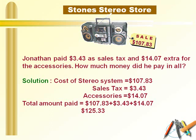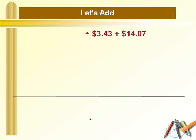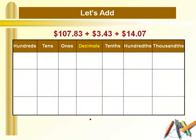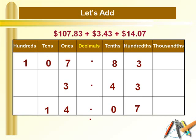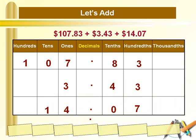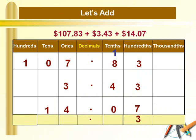Let's see how to add these three numbers. First of all, make a place value chart, put the decimal point in the decimal column, and place the numbers accordingly. Now let's add the digits on the right of the decimal point. First, add the digits at the hundredths place: 7 plus 3 plus 3 gives us 13. Put the 3 below the hundredths place and carry the 1 to the tenths place.